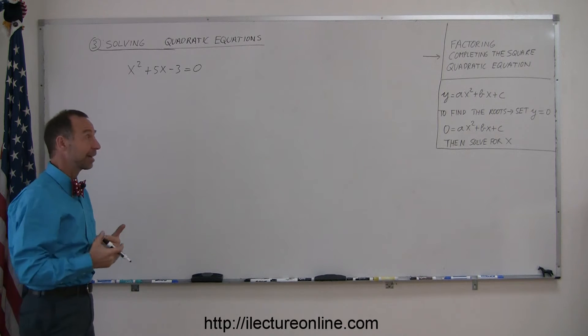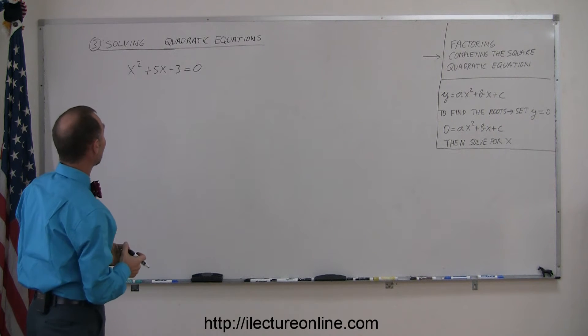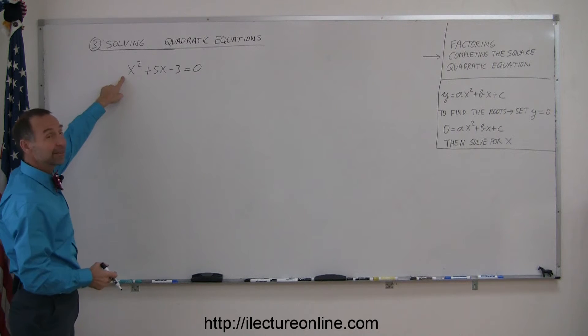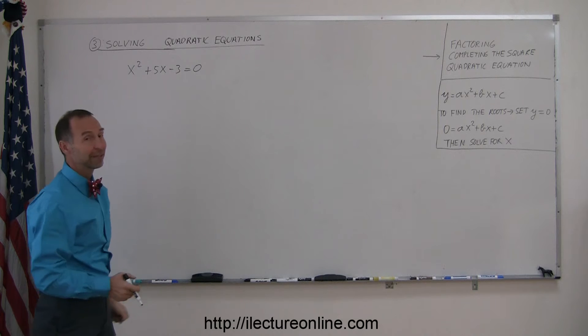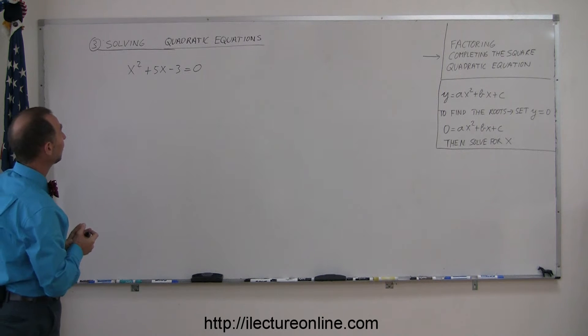Again, the technique is exactly the same as before. We go through a series of steps. The first step is to make sure that this is equal to 1. If it's not, we're going to divide both sides of the equation by the coefficient of the x squared term. In this case, it's 1, so we don't have to do that.